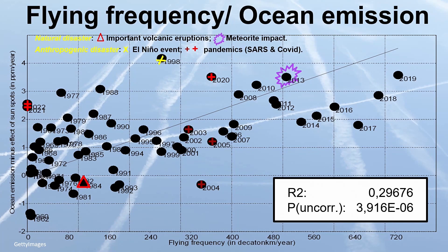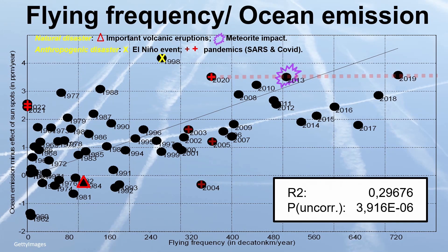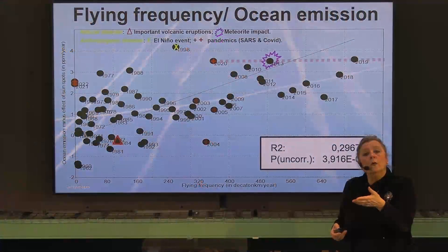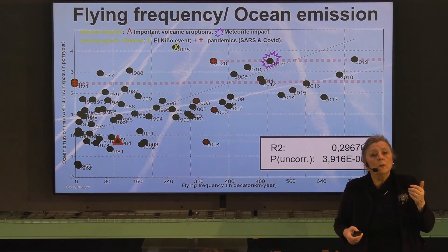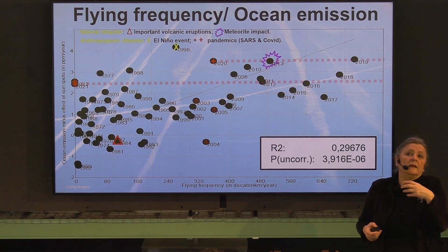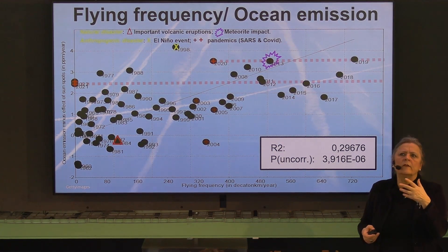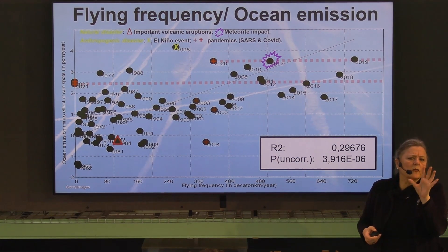Now let's look at pandemics. During soft pandemics we fly less and get less CO2 emission from the oceans. Looking at COVID, flying hours were relatively low; 2020 is low relative to 2019 emission — we would expect it to increase, but it doesn't. When we stayed home in 2021 and 2022, emission was very low, like the emission of 2013 or 2014. In 2022, we returned to flying, but there appears to be a lag of about three-quarters of a year.